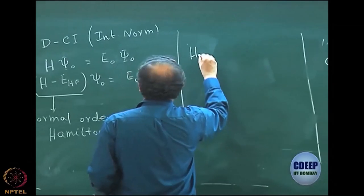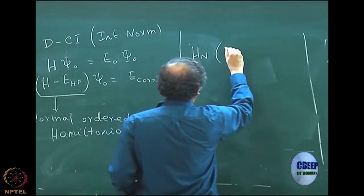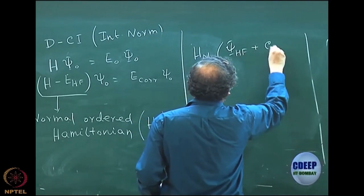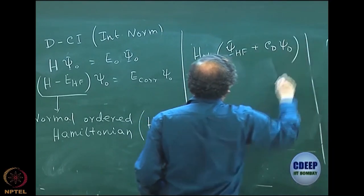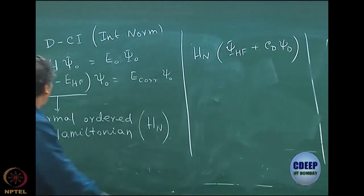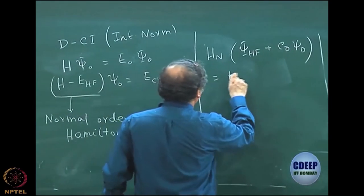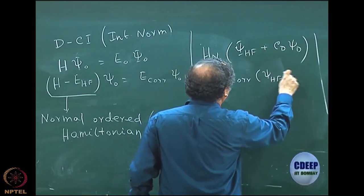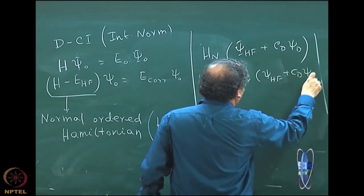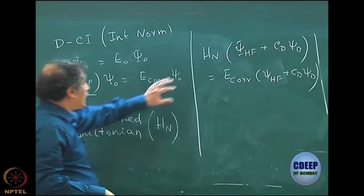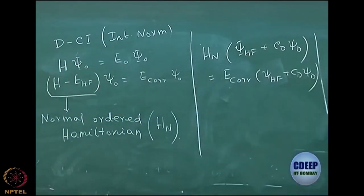H_N psi Hartree-Fock plus C_d psi d, I am just writing in a very cryptic term the same double CI in intermediate normalization. C0 is 1 equal to E correlation psi Hartree-Fock plus C_d psi d, except that the Hamiltonian is now H minus E Hartree-Fock. I have subtracted E Hartree-Fock from the Hamiltonian, that is all.